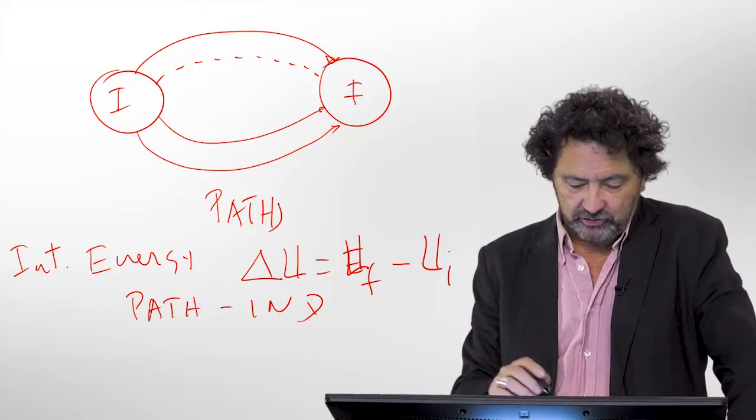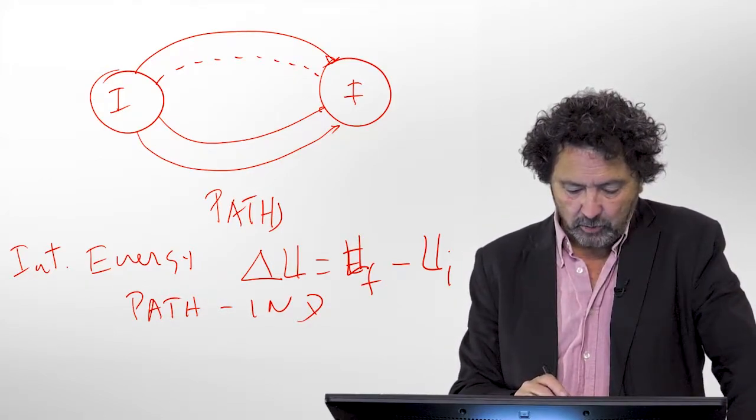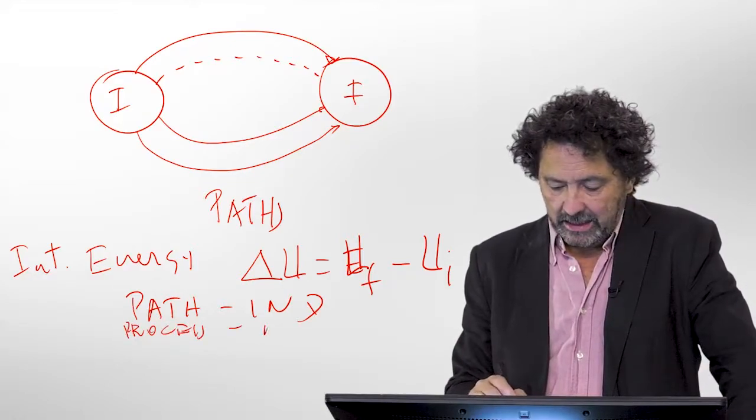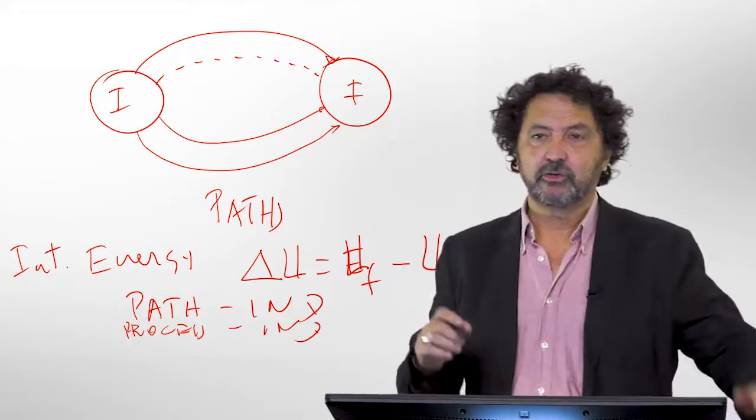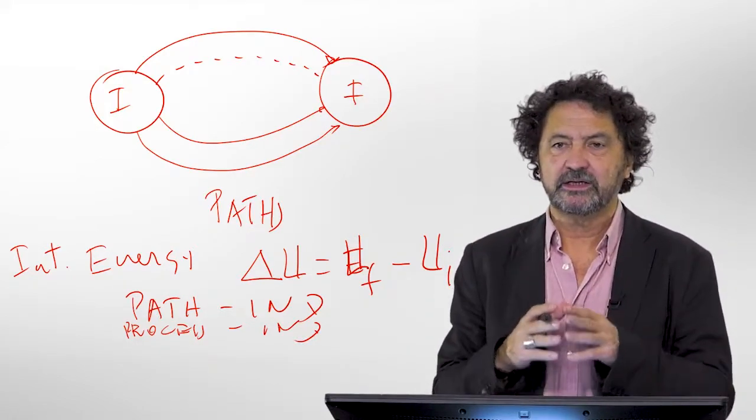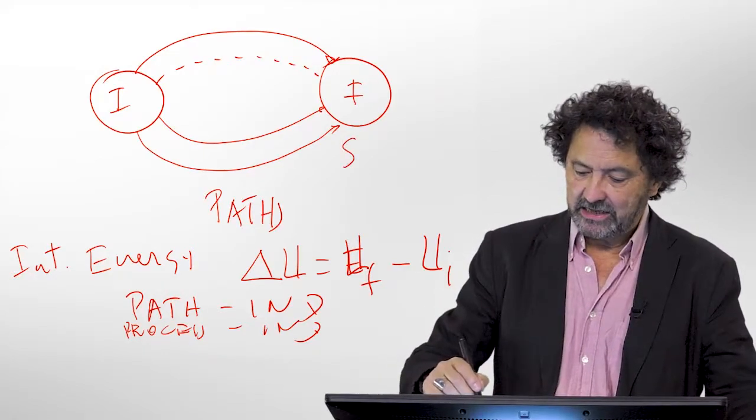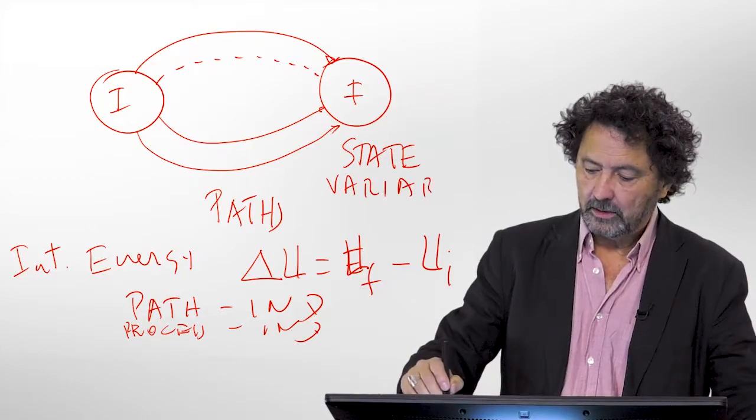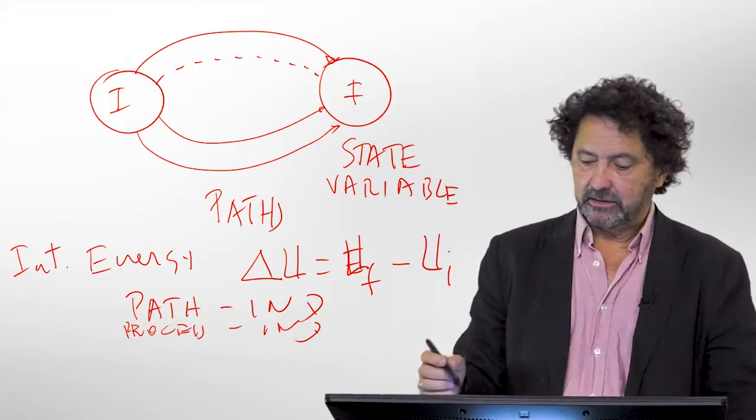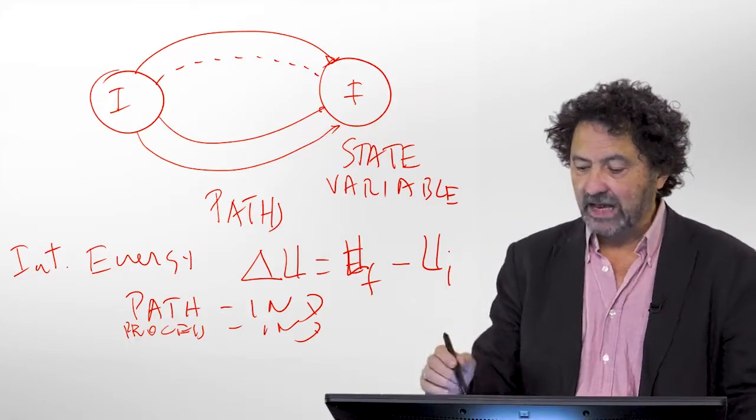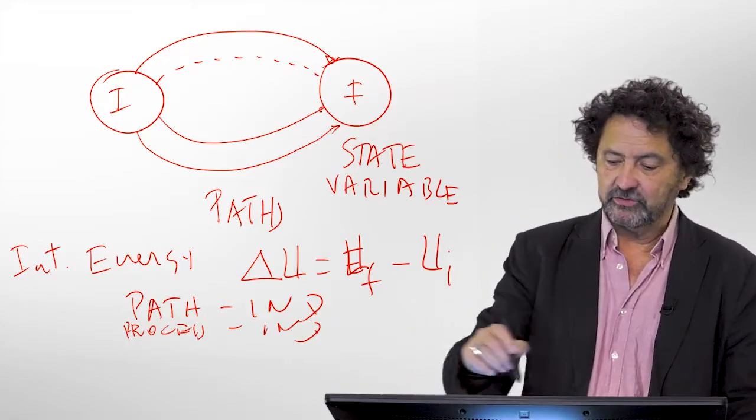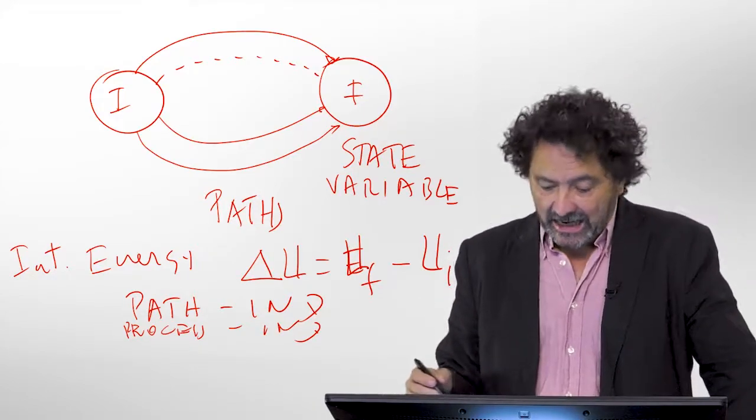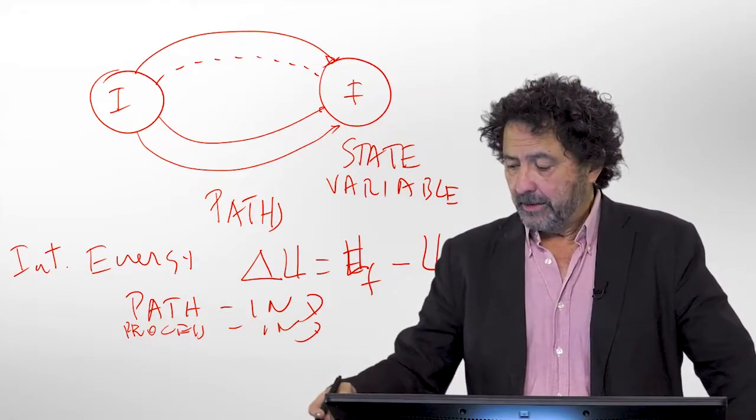So the energy final minus the energy initial. This change in internal energy is path independent, or we want to use a more common word, we say process independent. It doesn't really matter how you go from here to there. This type of quantity is called a state variable.